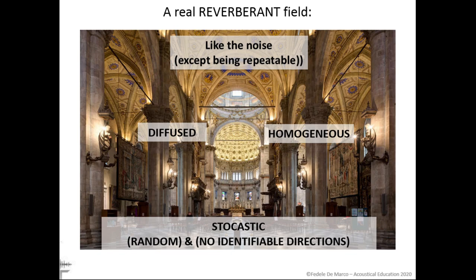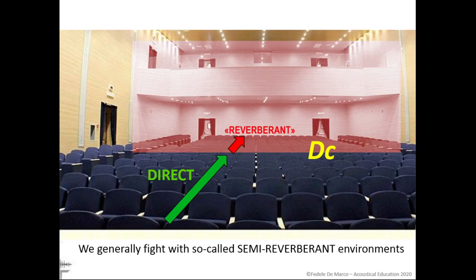The real reverberant field is generated in so-called Sabinian spaces. These environments are characterized by great dimensions generally, a mixed geometry where no one dimension prevails over the others, low absorption, and uniform distribution of absorbent units. The truly Sabinian spaces are not so common in reality. Those we usually deal with are characterized by semi-reverberant field behavior, in which areas of direct field near the source coexist with reverberant field zones at a distance from the source where the reflected field prevails.